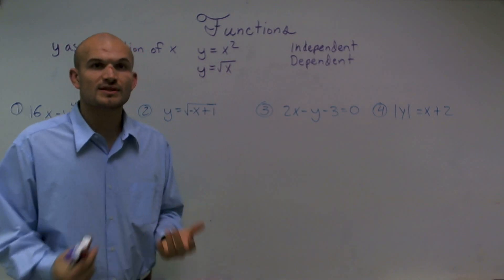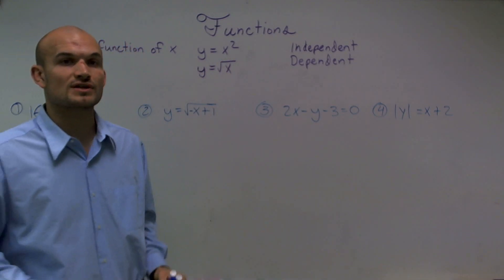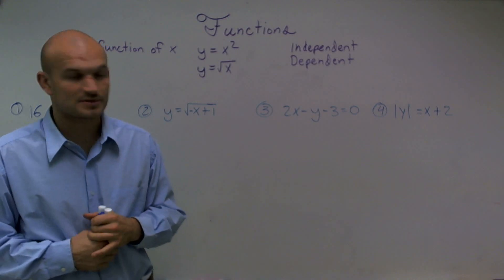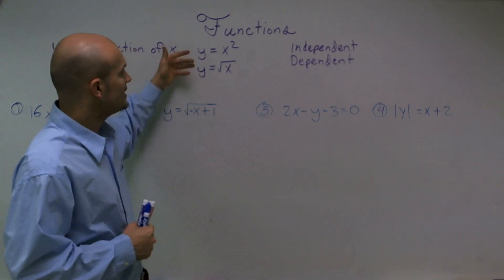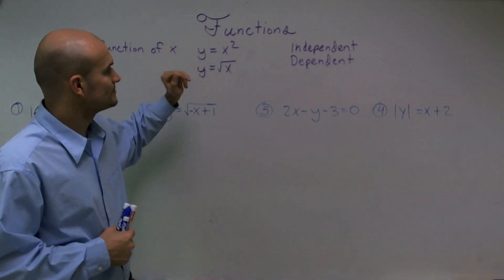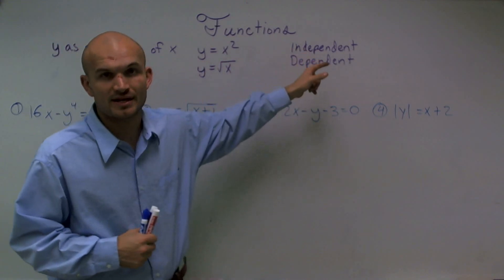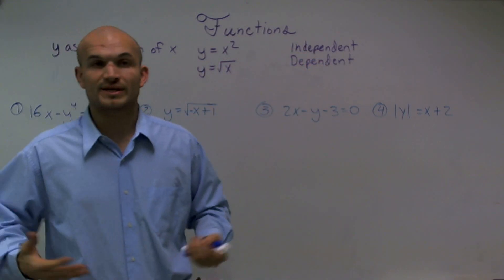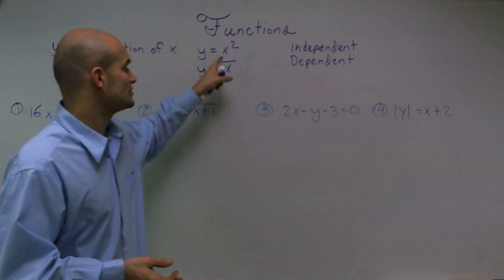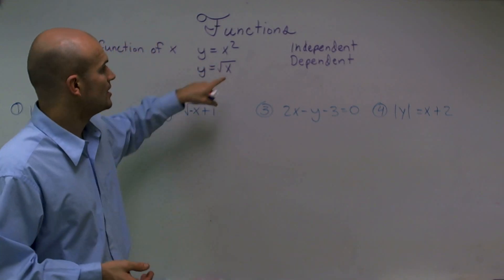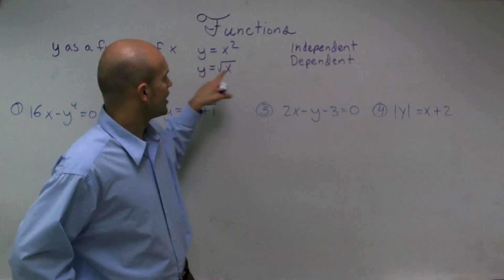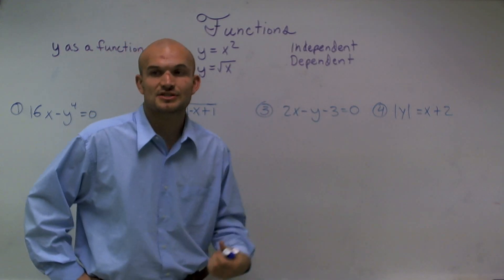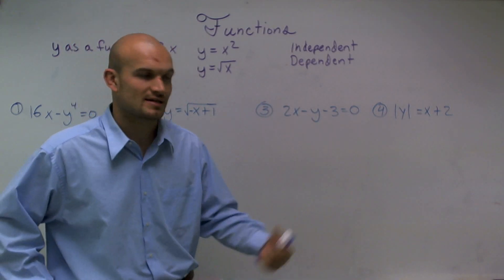When dealing with a function, it's very important to talk about independent and dependent variables. In our equation, x is our independent variable, meaning it doesn't depend on anything — we give it a value and use it in the equation. However, y is what we call our dependent value, because it actually depends on the value of x.